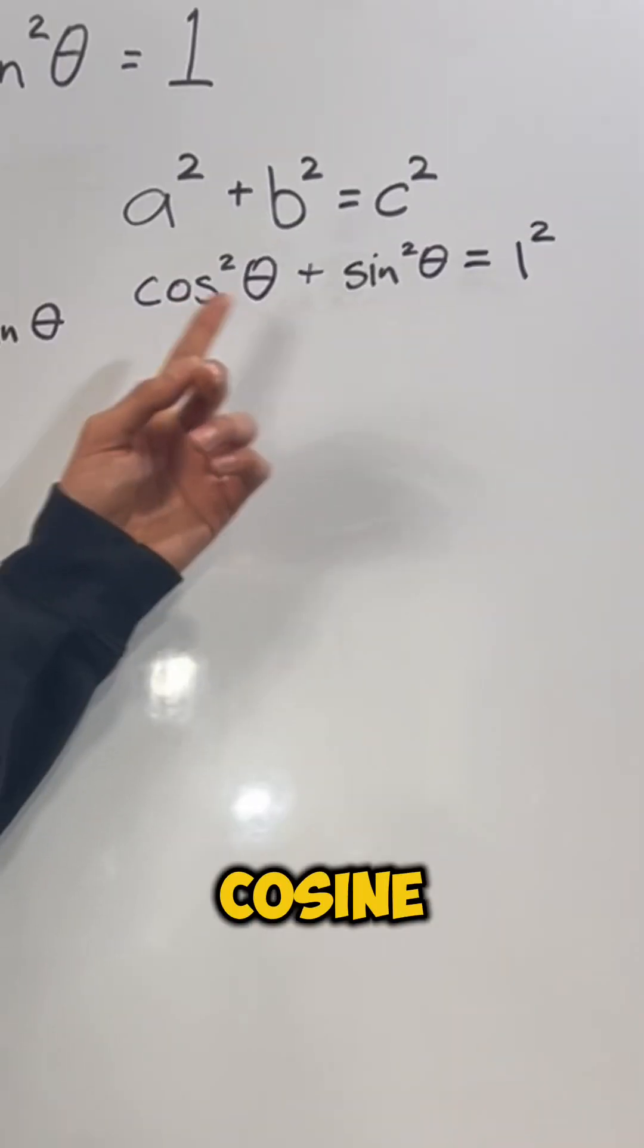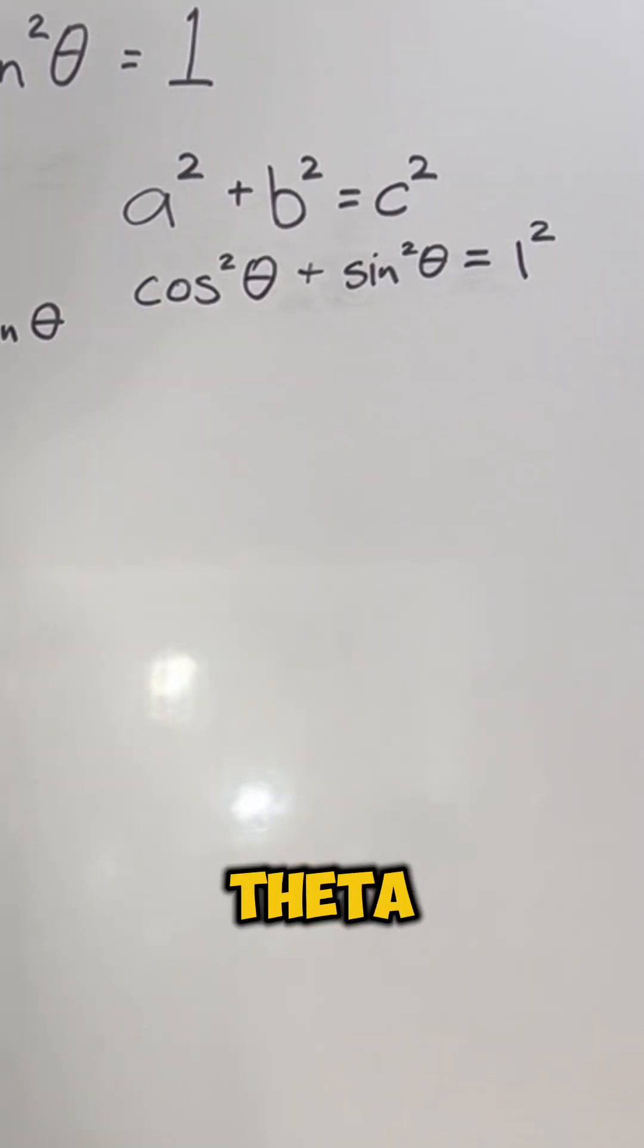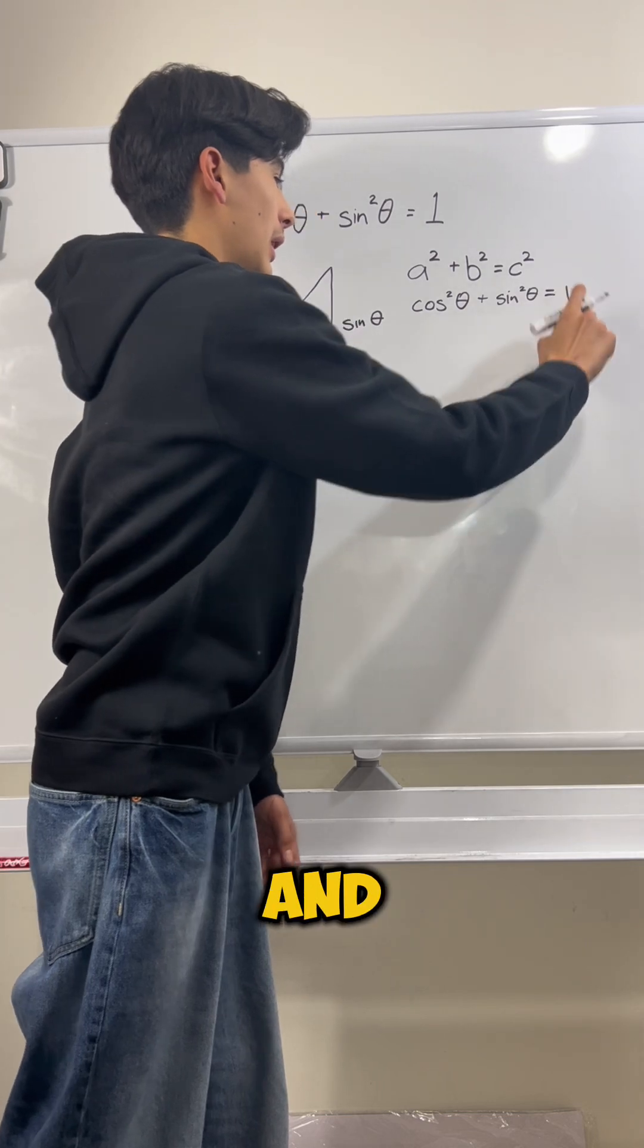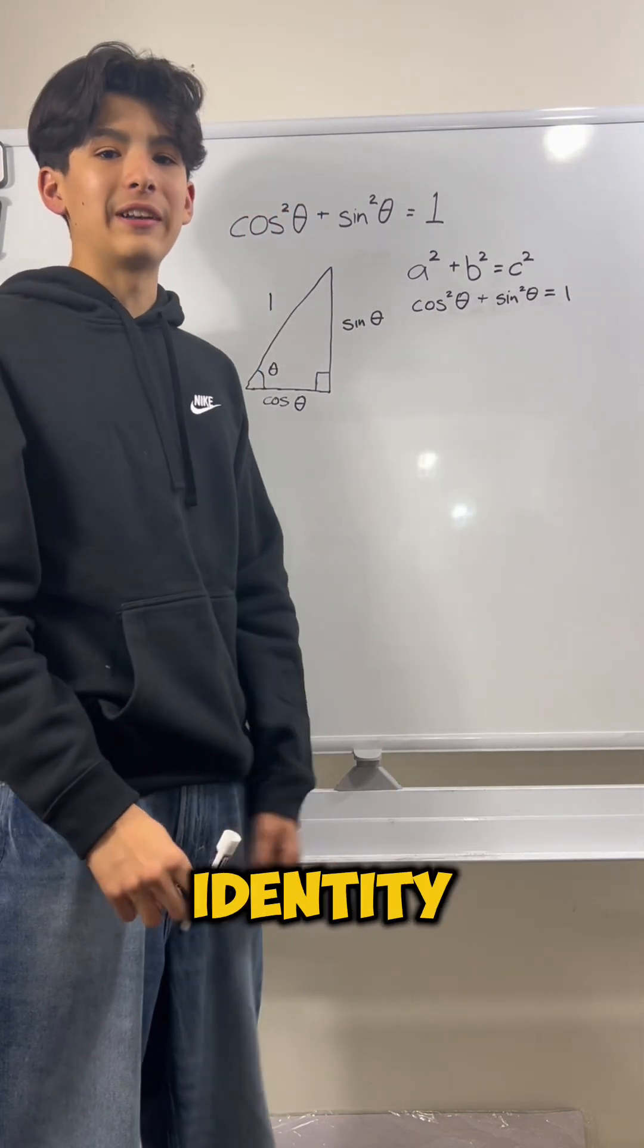Now we have cosine squared of theta plus sine squared of theta should equal 1 squared. And what is 1 squared? It's just 1. And what we have here is our Pythagorean identity. God bless.